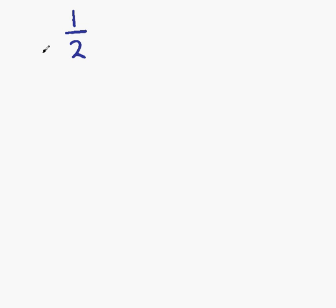If, for example, we multiply the denominator by 2, then in order to achieve an equivalent fraction, we must multiply the numerator by the same amount. So what we have is 2 times 1 on the top, which is 2, and 2 times 2 on the bottom, which is 4. So our new fraction is 2 quarters.